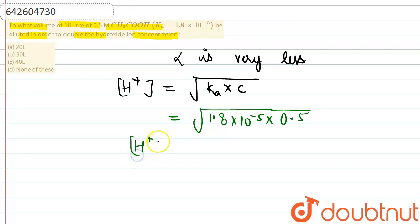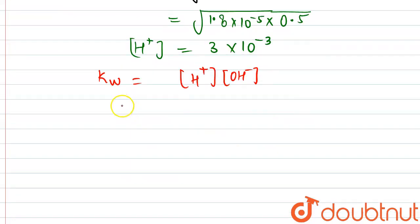From here, H+ ion concentration will be equal to 3 × 10^-3. Now we know the expression for Kw that is equal to H+ ion concentration multiplied by the OH- ion. Since the H+ ion concentration is now known to us, we will be getting the direct value from here.